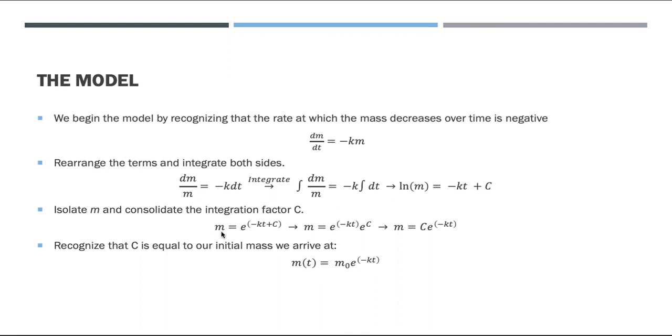Next, we start solving for mass. We do a little algebra to rearrange the constant and we arrive at mass is equal to the constant C times E raised to the negative KT. Recognizing that this integration constant C is equal to our initial mass, we substitute M₀ into the equation.